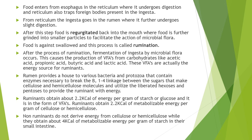The microbial flora of the ruminant rumen includes bacteria and various protozoa, and they cause the production of volatile fatty acids from carbohydrates. These volatile fatty acids produced from carbohydrates or starches are acetic acid, propionic acid, butyric acid, and lactic acid. These volatile fatty acids are the energy source for ruminants, produced by fermentation in anaerobic conditions.